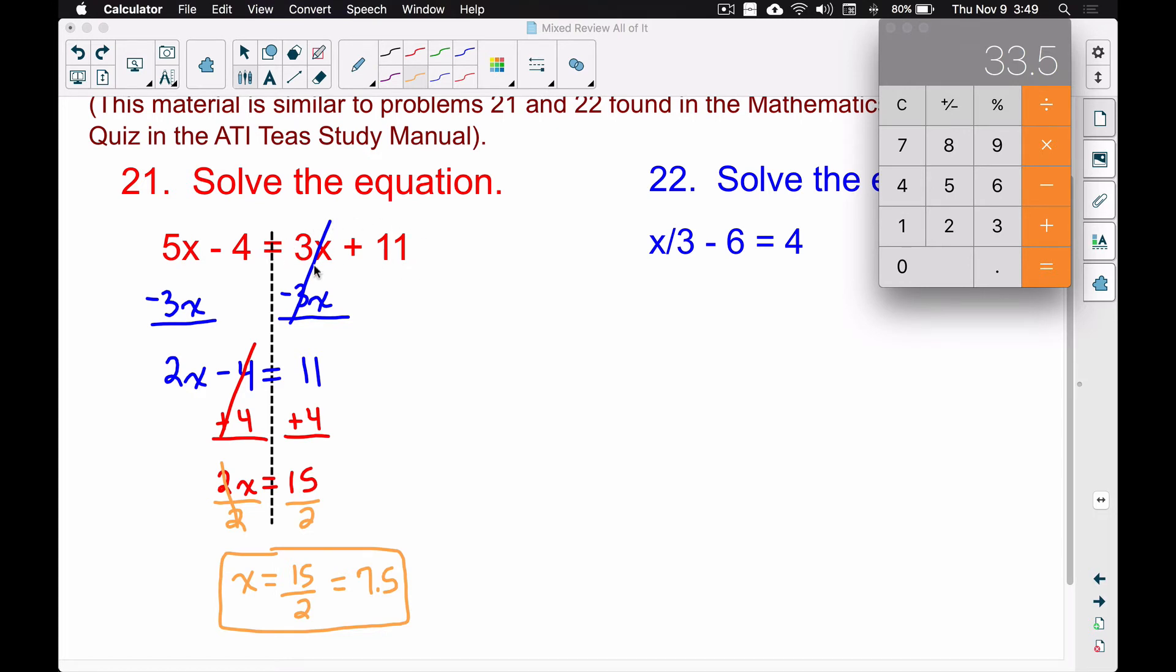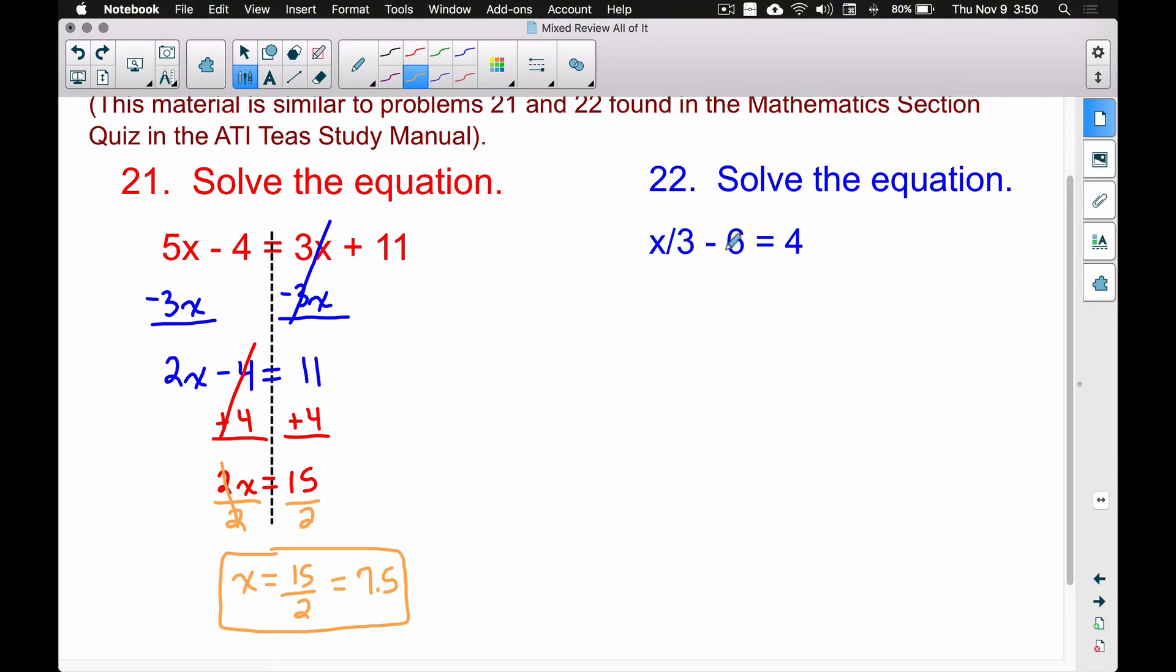Well, for this equation to be correct, this needs to equal 33.5 over here when we plug 7.5 into x. Let's see if that works. Taking 3—I'm doing this side now—3 times 7.5 gives you 22.5. Let's add 11 to it, and we get 33.5. So therefore, this is the correct solution because when we plug this number in, we get the same number on both sides. 7.5 is the solution to our equation. The answer to the problem is not 33.5—that's just what we get on both sides when we check our work.